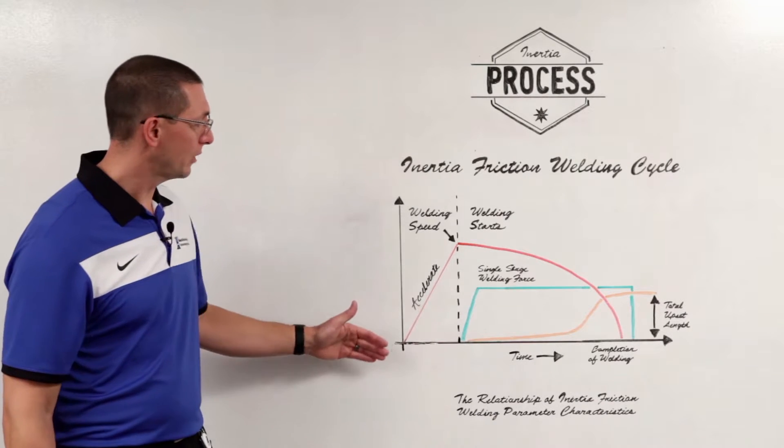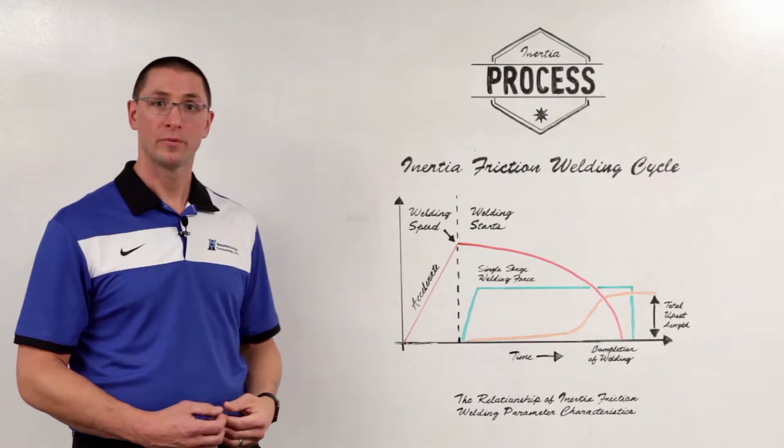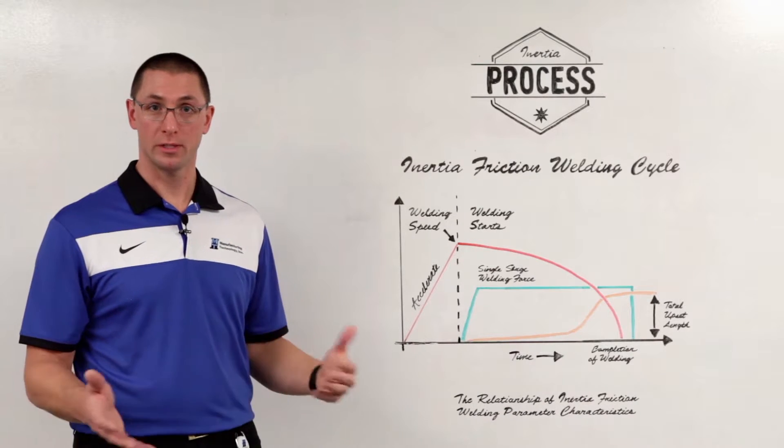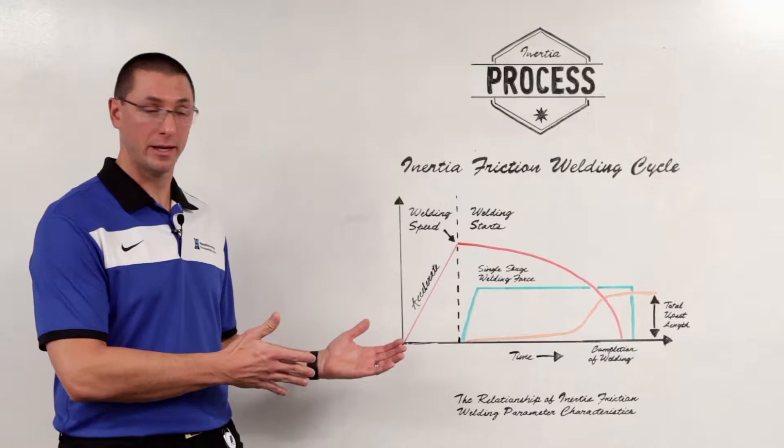So we take these flywheels and we accelerate them up to a desired speed. The speed is represented by the weld line. Once we get to that desired speed, we let the flywheels coast. We disengage the motor. This stores all the energy that we need as kinetic energy.